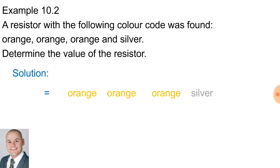So orange is represented by the number three, so we're going to have three, three, and three zeros, and a tolerance of ten percent. That would give us 33,000 ohms with a tolerance of ten percent. If we simplify this further, if we divide by a thousand or multiply by 10 to the minus three, we would end up with a 33 kilo-ohm resistor and a tolerance of ten percent.